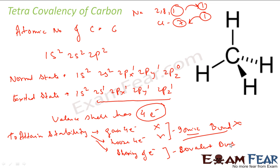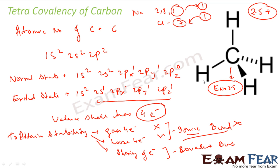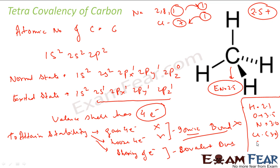The bonds are generally not pure covalent or pure ionic. If it is a covalent bond, it will have slight ionic character, and that depends on the electronegativity difference. If the electronegativity difference is 2.5 or more, it is generally ionic. The electronegativity of carbon is 2.5. Hydrogen is 2.1, oxygen is 3.5, nitrogen is 3.0, chlorine is 3.0, and sulfur is 2.5.